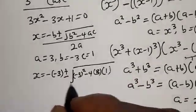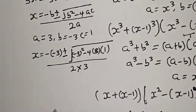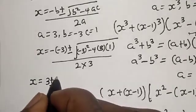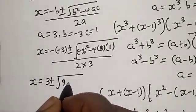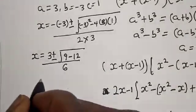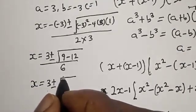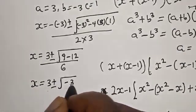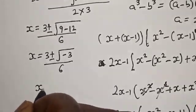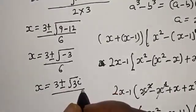Substituting: x equals 3 plus or minus square root of 9 minus 12, divided by 6. This gives x equals 3 plus or minus square root of negative 3, divided by 6. Therefore x equals 3 plus or minus square root of 3 times i, over 6.